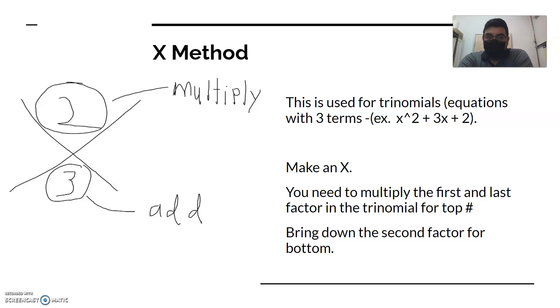This is called the X method, not the X-Men, but the X method. This is used for trinomials. This is an equation with three terms. We are usually familiar with binomials which we've done with one-step and two-step equations.